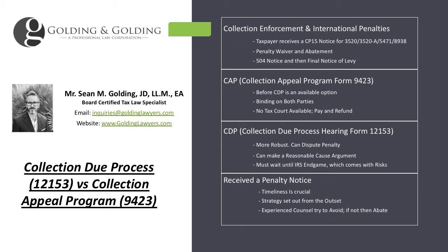So if the 504 notice comes in and you automatically run out and do the collection appeal, you can do a collection due process later, but you may not want to. We have many clients who, if they can afford to pay the penalty, would prefer to pay the penalty and cut off the interest. With the collection appeal program, if your goal is to go to tax court no matter what, then here's what you do instead: instead of filing Form 9423 and cutting off your options, you could reach out to the IRS and see if you can get enforcement stayed. Normally, first time around, they'll do it anywhere from six weeks to 14 weeks, depending on who you get at the IRS.